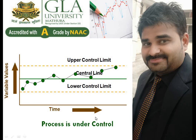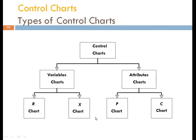Welcome back everyone. In this video we are going to talk about the various types of charts. This is in continuation with my previous video where we discussed the meaning, benefits, and uses of various types of charts. In variable charts we are going to study the R chart and the X chart — range and central tendency. Characteristics which cannot be measured quantitatively are called attribute charts, which include the p chart and c chart.